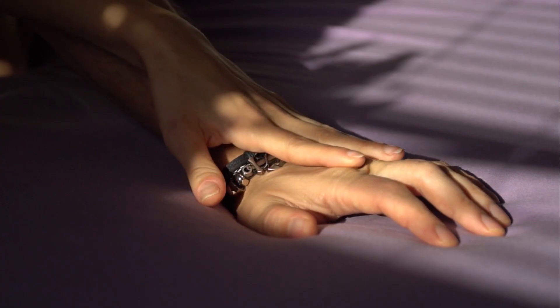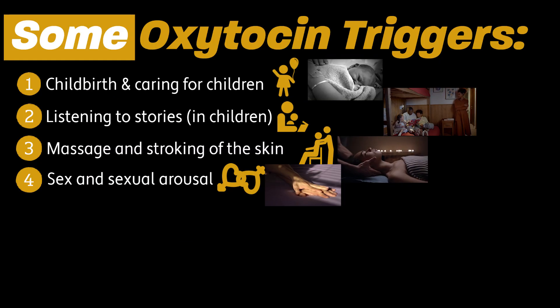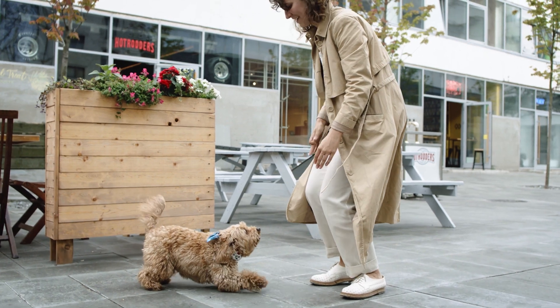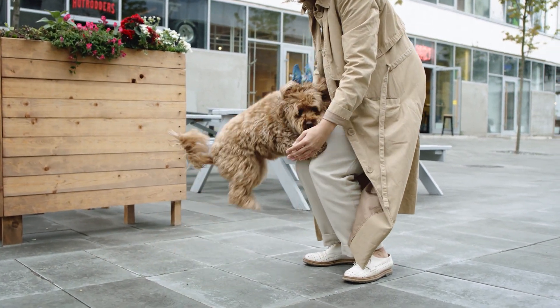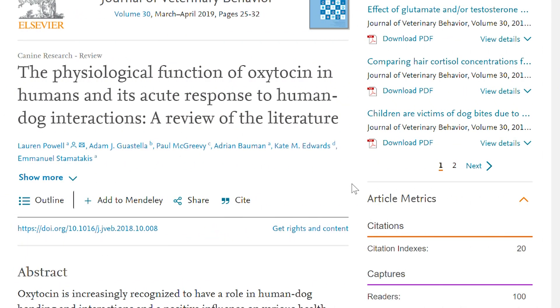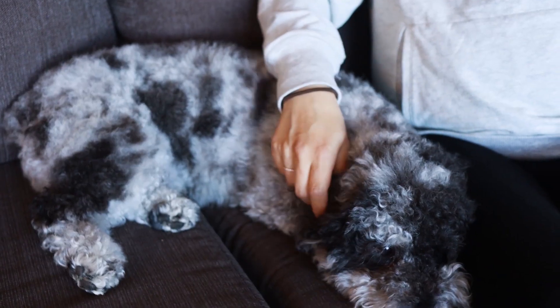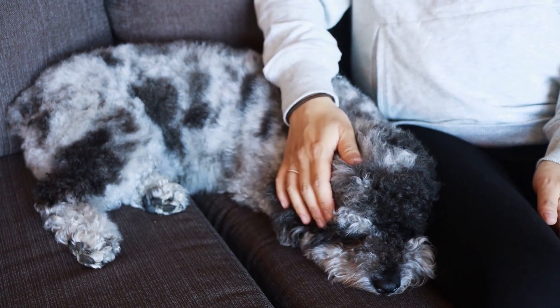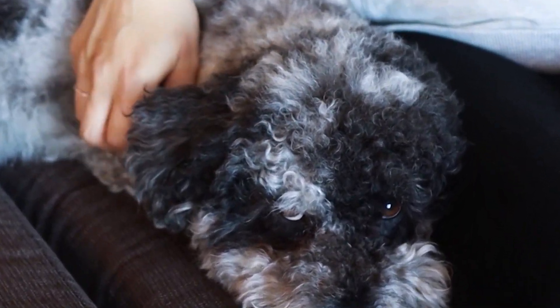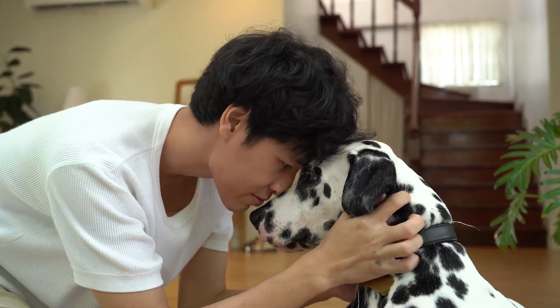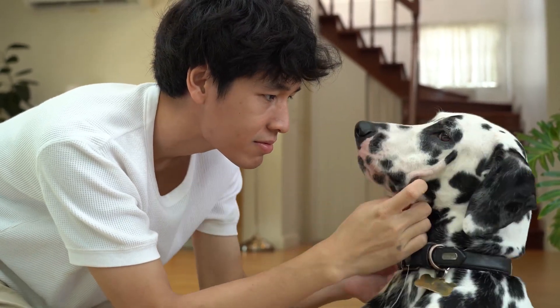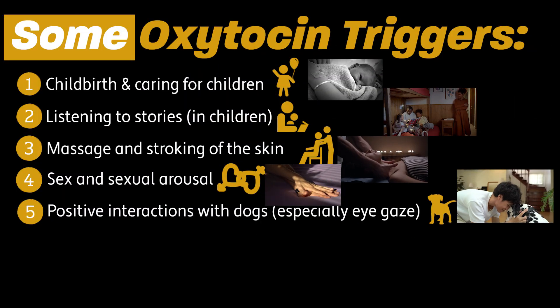Furthermore, sexual arousal and orgasm seem to increase oxytocin as well. Additionally, oxytocin can be released following not only human-human interactions, but also human-dog interactions. A 2019 review by Powell and colleagues found that positive human interactions with familiar dogs were associated with increased oxytocin, especially interactions involving mutual eye gaze. In other words, looking into your dog's eyes while you pet or play with them may increase your oxytocin levels.